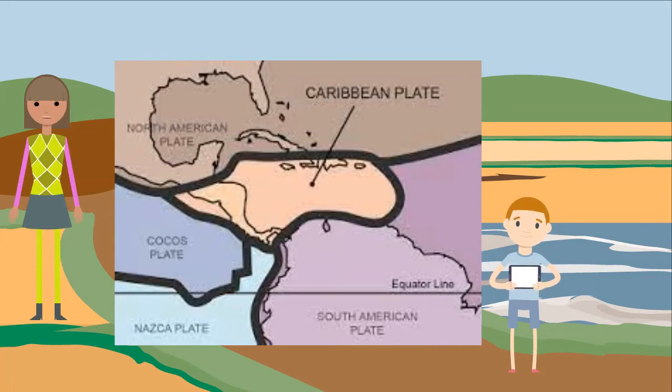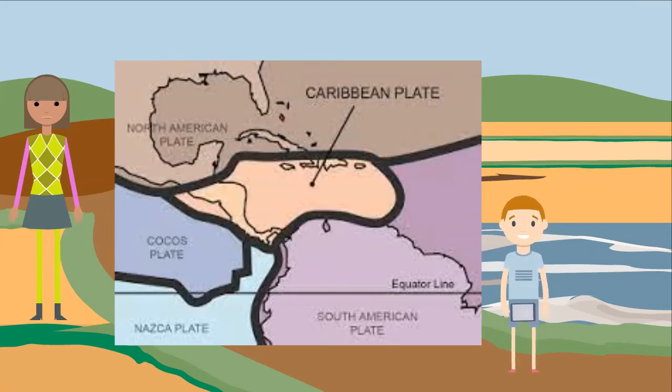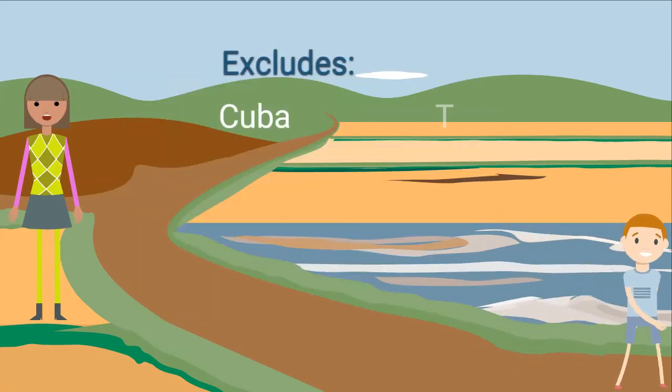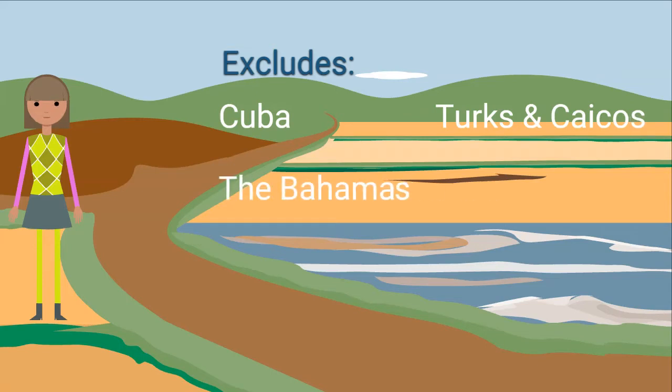Looking at the image, you would notice that Cuba is not located on the Caribbean plate, but rather the North American plate, and so the geological definition does not capture all the countries that are a part of the Caribbean. So it excludes Cuba, Turks and Caicos, the Bahamas, and Guyana.